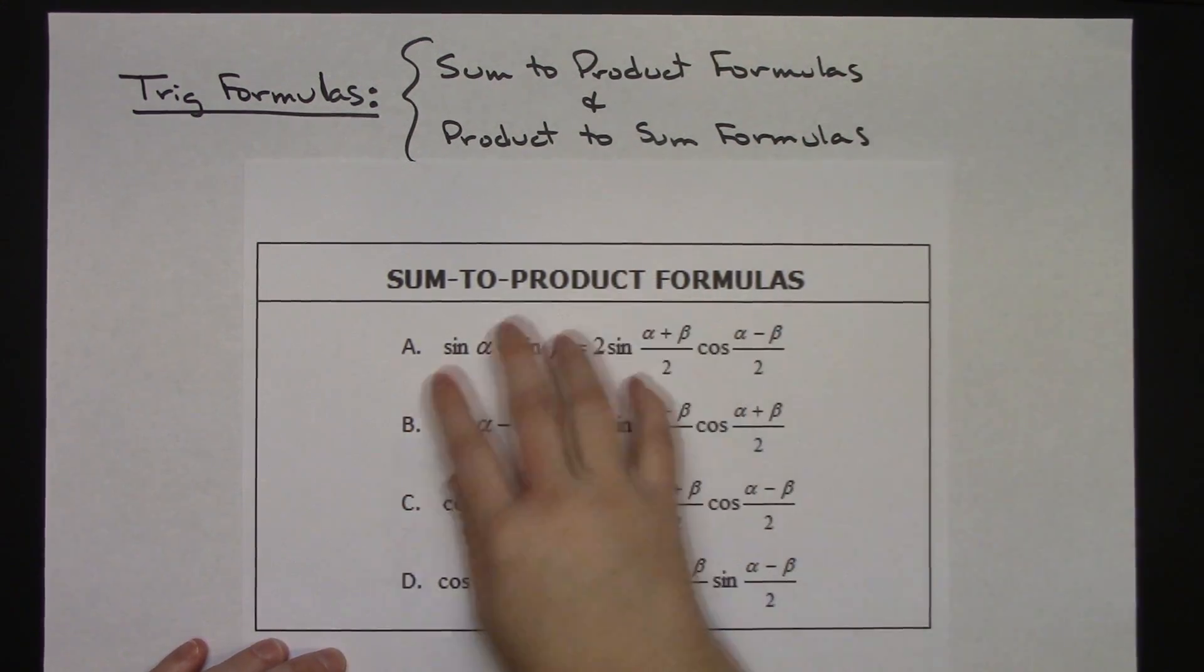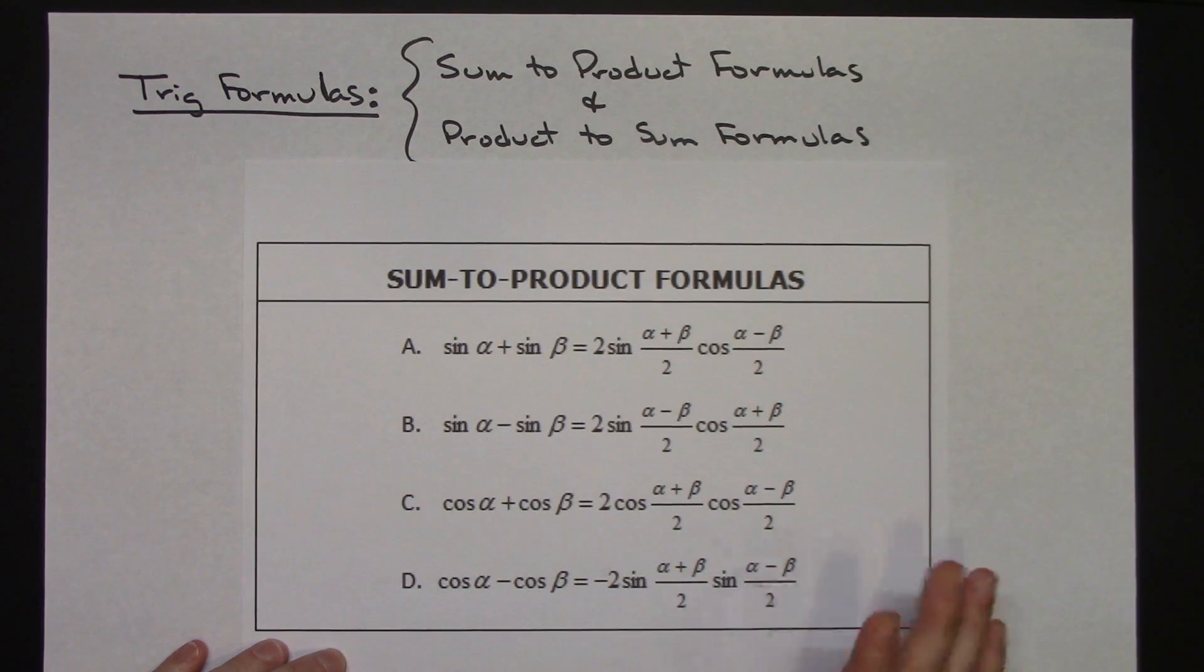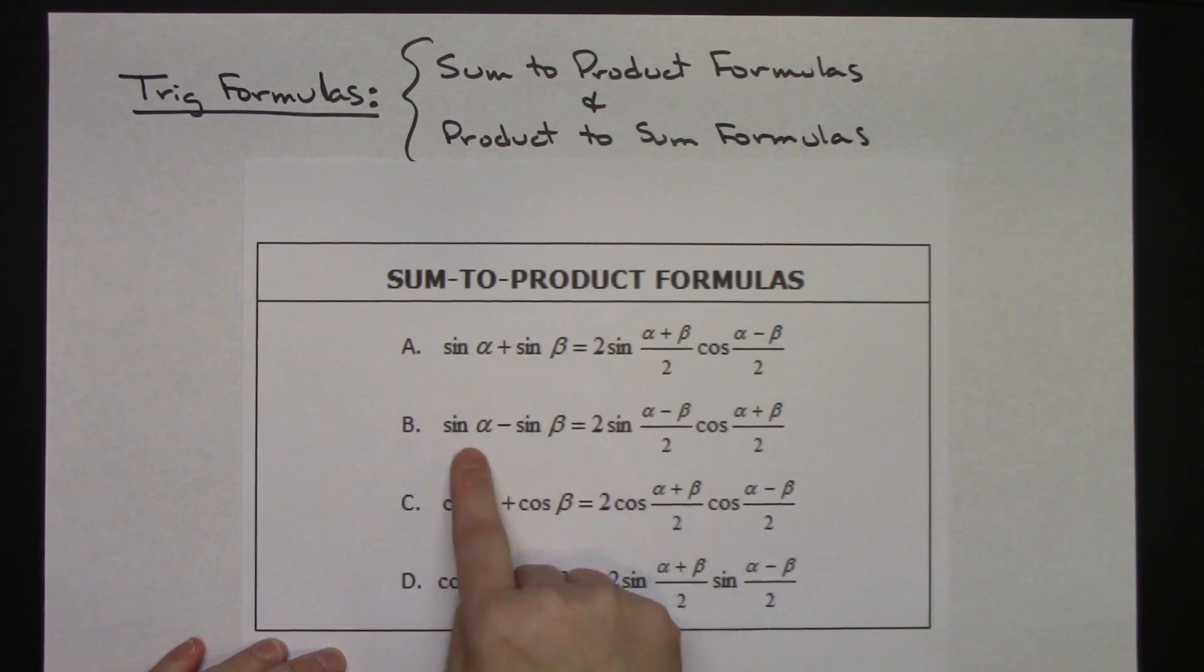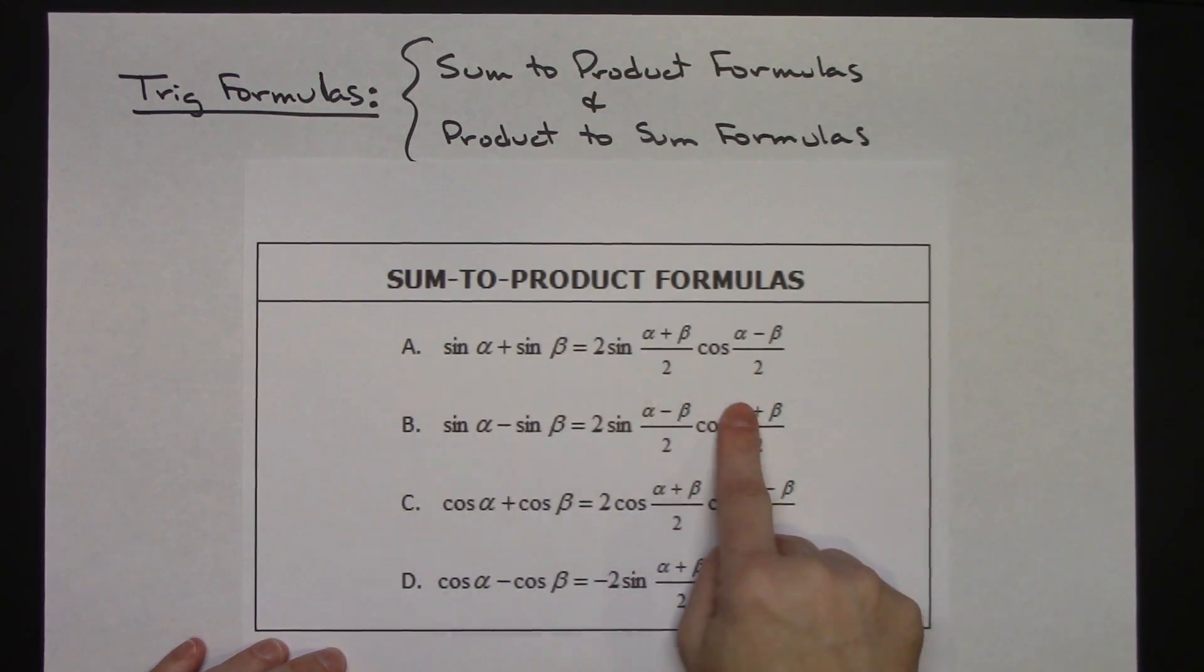These are the first set that I want to talk about. They are the sum to product formulas. Eventually you would probably need to memorize these and the more you do problems with them the easier it is going to be to memorize. But basically you have a sum with your cosine and sine values and you are turning this into a product. That's why they're called sum to product formulas.